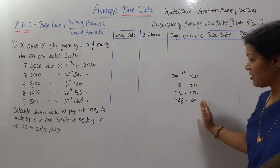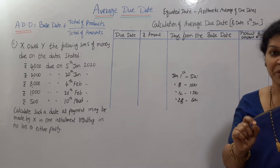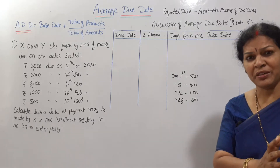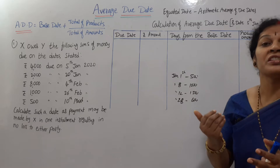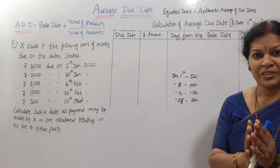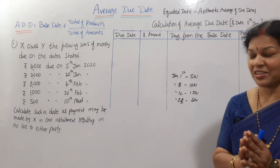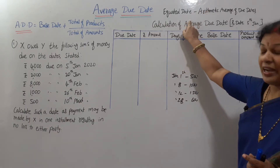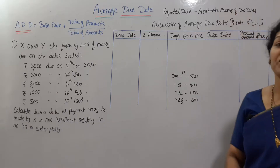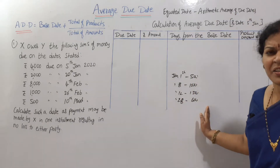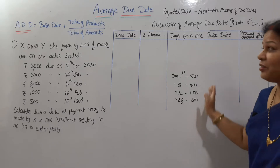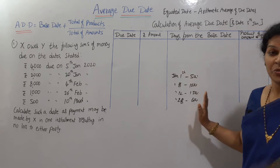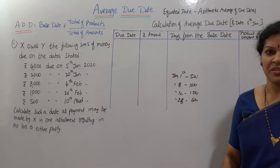We want to find one particular date in between these four dates — one date which is not a loss for the person making the payment and also not a loss for the person receiving the amount. Both of them get equality and justice. That date we call the Average Due Date, also called equated date or arithmetic average due date. So this is the date on which we want to make the payment.